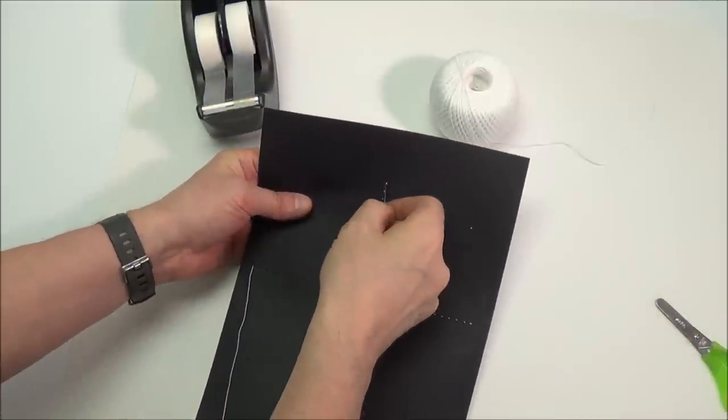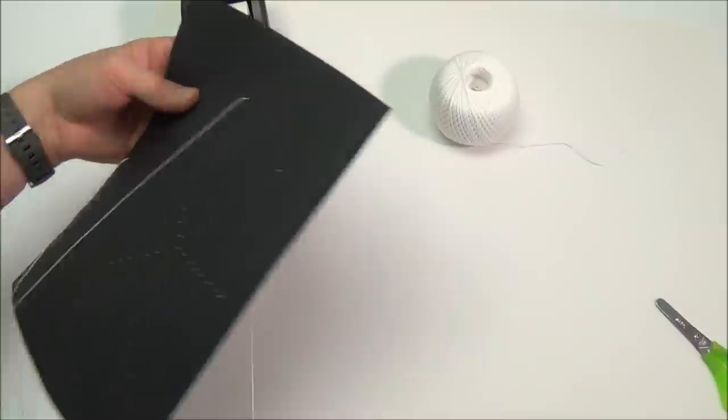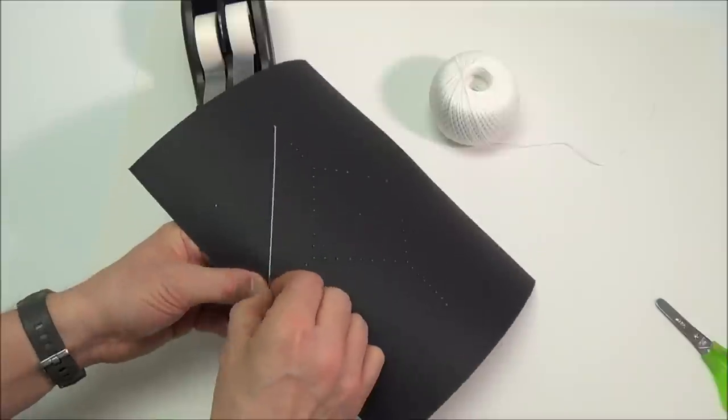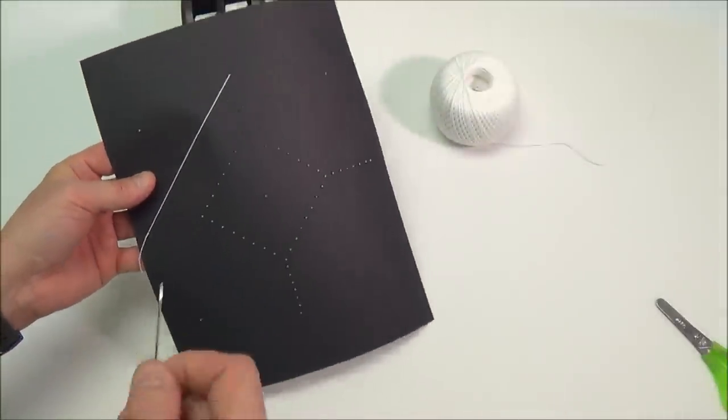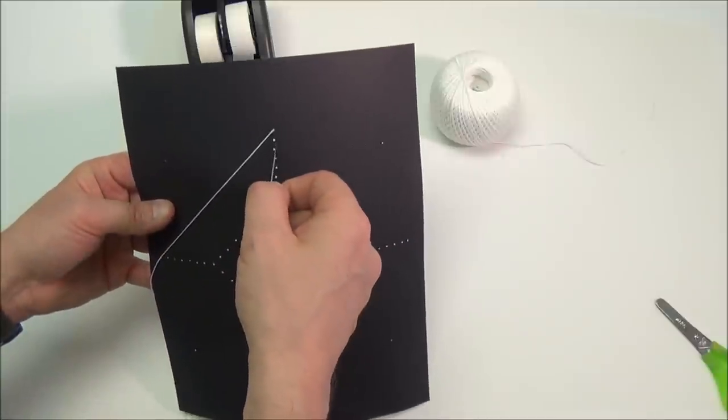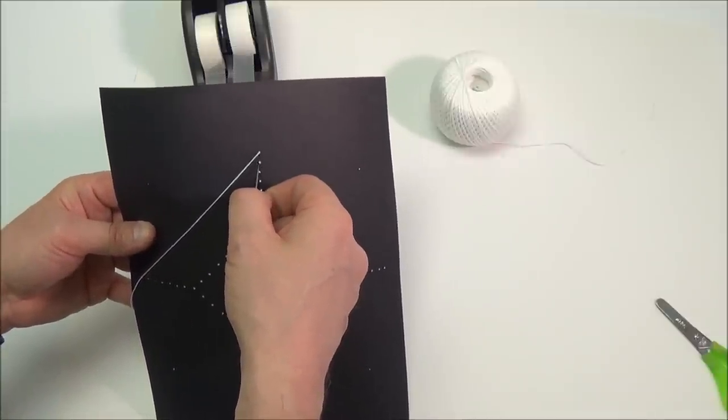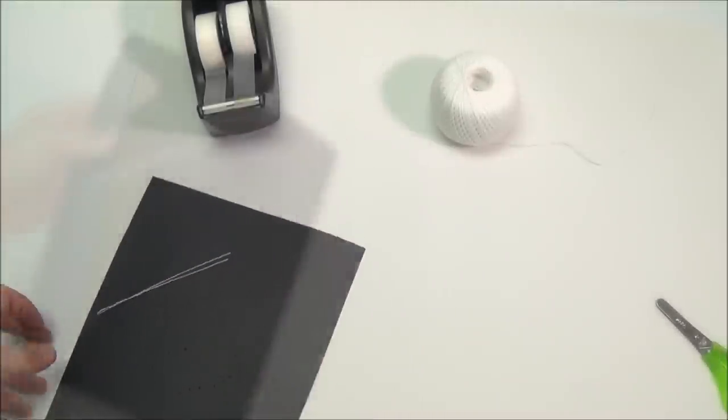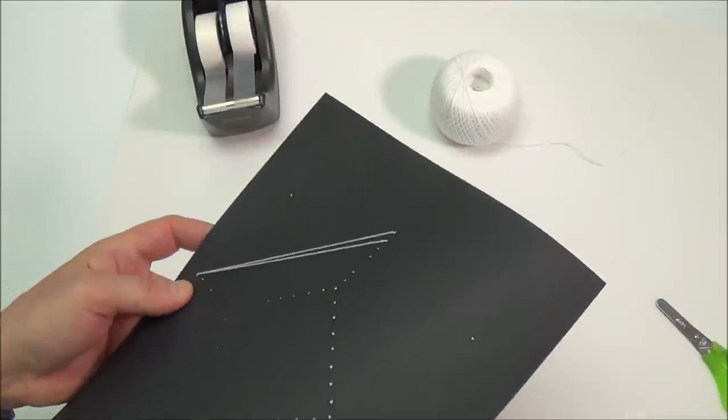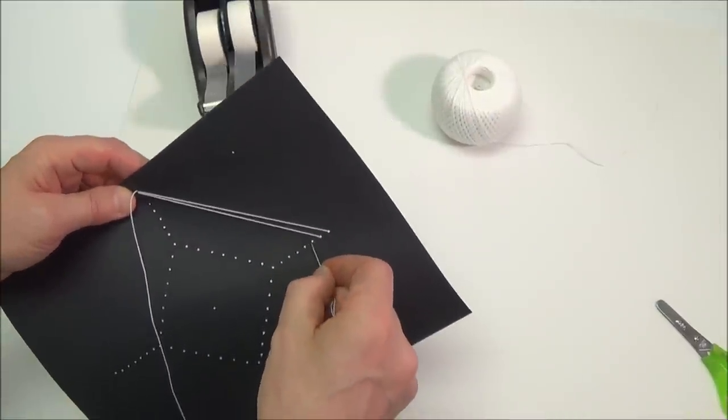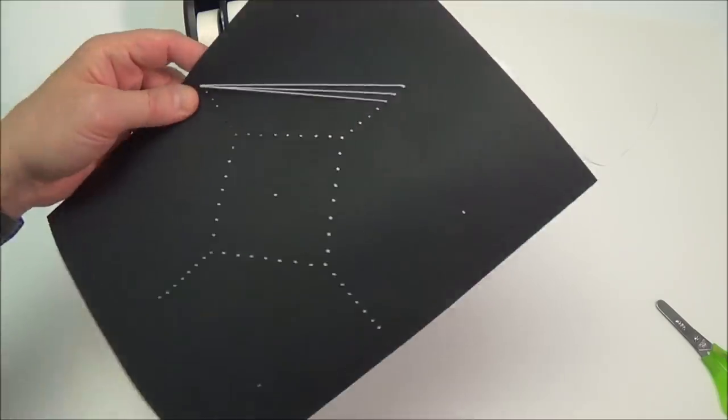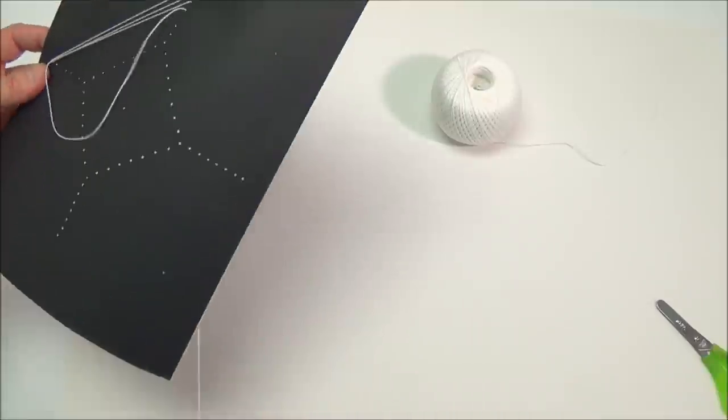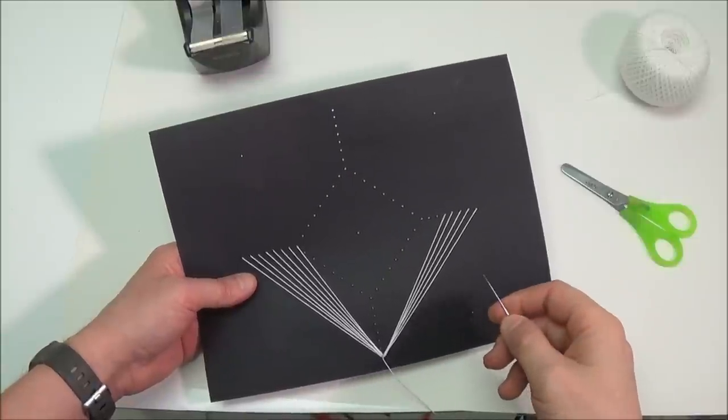Take the string through the first hole in the line. Bring it back through the first hole. Continue with the next hole in the line. String the rest of the holes on the first line.